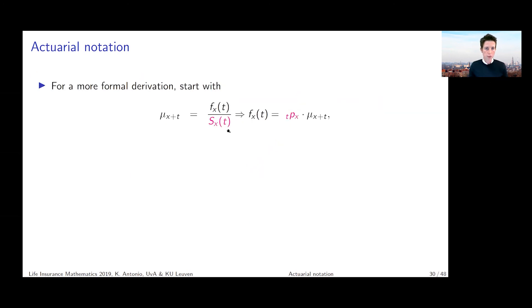So what you're then doing is you're going to use the connection between your force of mortality, the force of mortality, which is a hazard rate, which is a probability density function divided by a survival function. And that gives you an expression for this probability density function. It's the survival function _tP_x multiplied with the force of mortality.